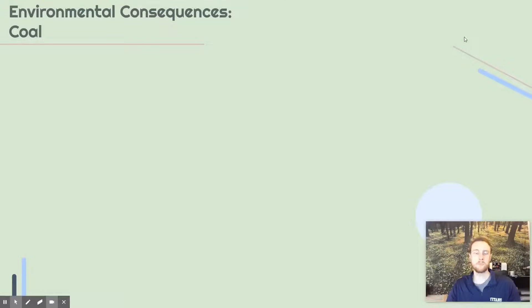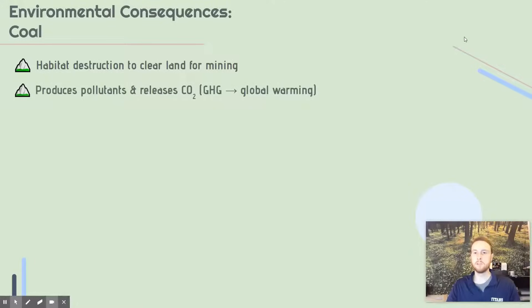Now we'll talk about some of the environmental consequences of using coal as an energy source. First, there's habitat destruction when we clear land in order to mine coal — this could be the removal of a forest ecosystem to bring in digging equipment. Next, there's the release of a lot of air pollutants and carbon dioxide. Air pollutants are specific chemicals that lower air quality from a health standpoint, whereas carbon dioxide acts as a greenhouse gas to drive global warming.